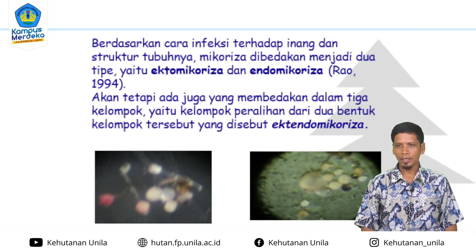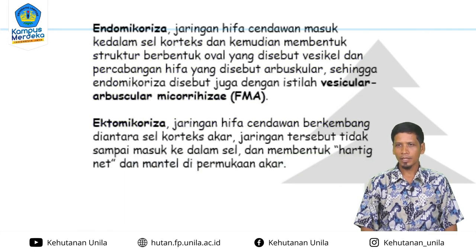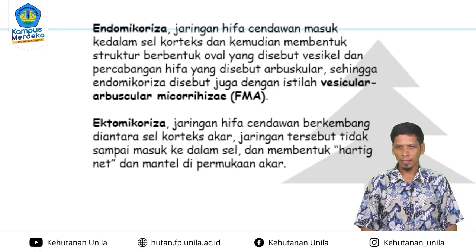Ada juga yang membedakan dalam tiga kelompok, yaitu kelompok peralihan antara endo dan ecto yang disebut ectendomycorrhiza. Endomycorrhiza merupakan jaringan hifa cendawan yang masuk ke dalam sel korteks dan membentuk struktur berbentuk oval yang disebut vesikel. Di percabangan hifa disebut arbuskular, sehingga endomycorrhiza disebut juga vaskular-arbuskular mikoriza (FMA). Sedangkan ectomycorrhiza, jaringan hifanya berkembang di antara sel korteks akar, tidak masuk ke dalam sel, dan membentuk hartig net dan mantel di permukaan akar.